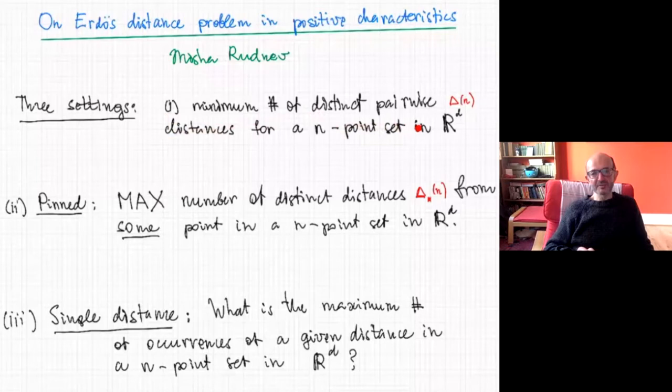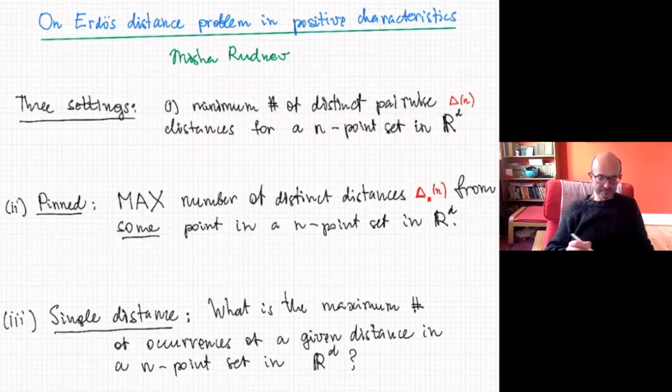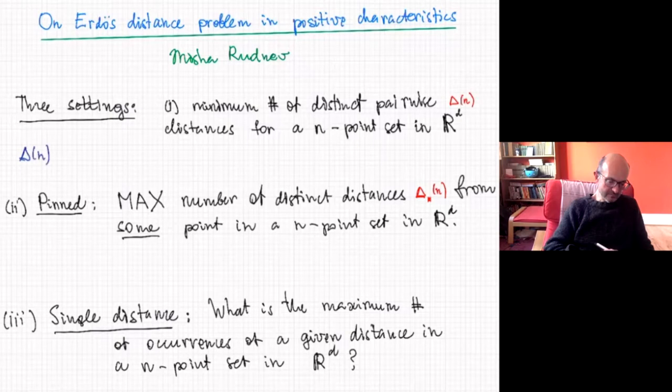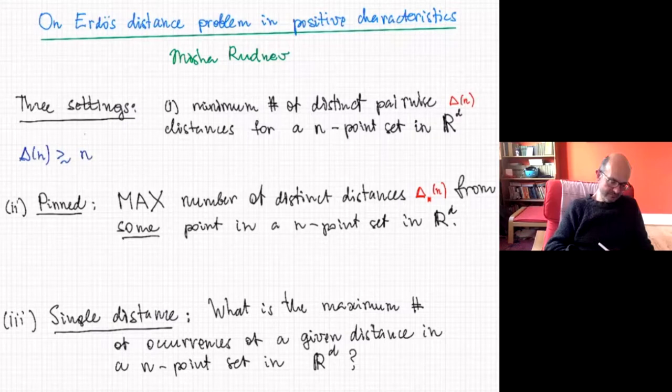There are several versions of the Erdős distance problem. The first one is: what is the minimum number of distinct pairwise distances that an n-point set in D dimensions generates? So delta of N would be the quantity, and Erdős conjectured that delta of N is greater than — up to logarithmic factors — N to the power 2 over D.